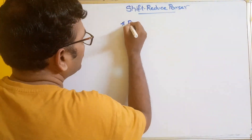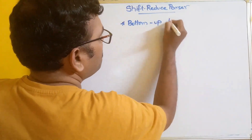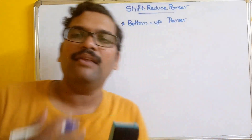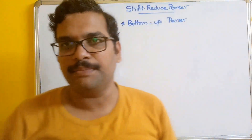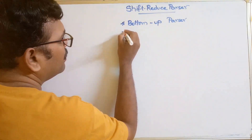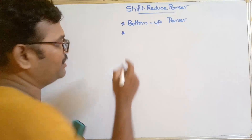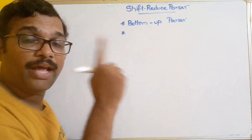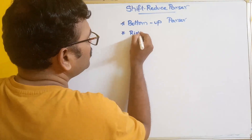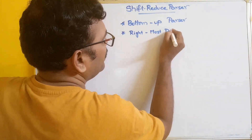This is a bottom-up parser. That means we will start from the leaf node and then move towards the start symbol. It will use rightmost derivation. In the top-down approach we use leftmost derivation, but now in bottom-up parsing we use rightmost derivation.